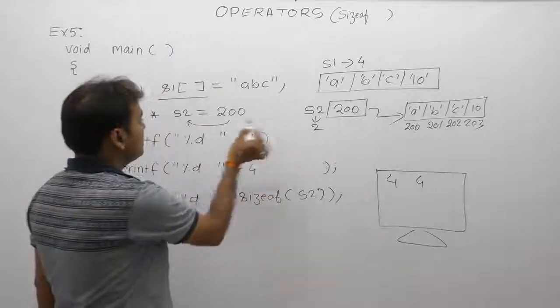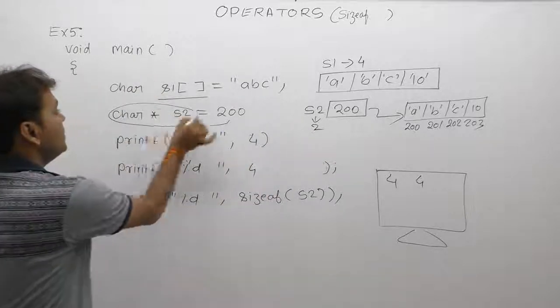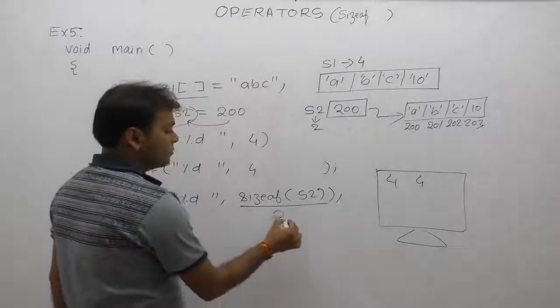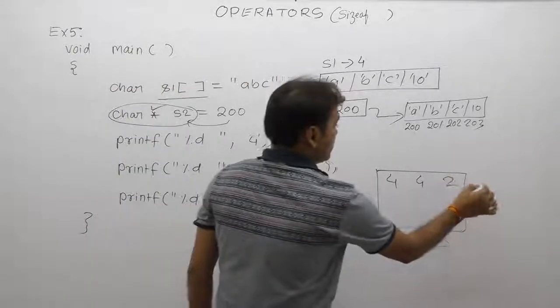Next, size of s2. s2 is a pointer because it is declared with star. A pointer will take always 2 bytes, therefore 2 is printed here.